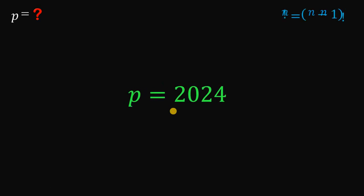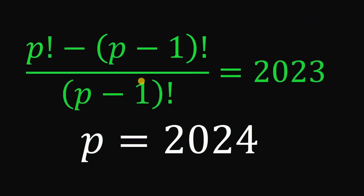Therefore, our answer to this question, what is the value of P given this equation? P factorial minus P minus 1 factorial all over P minus 1 factorial equals 2023. And our answer is 2024.